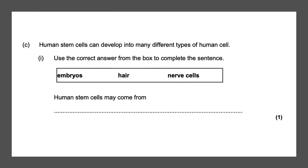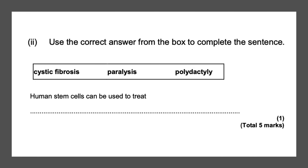Human stem cells can develop into many different types of human cell. Use the correct answer from the box to complete the sentence: human stem cells may come from — the answer is embryos — which gives you your one mark.